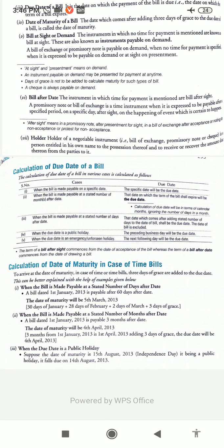Bill sent for collection: sometimes the drawer or holder of the bill, instead of discounting the bill, sends it to the bank with instructions to keep the bill till maturity and collect its amount from the acceptor on the due date. The bank credits the customer's account by the amount it actually receives from the drawee.